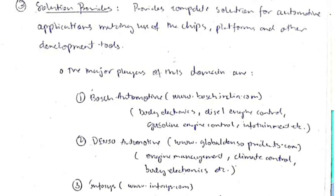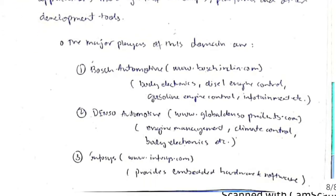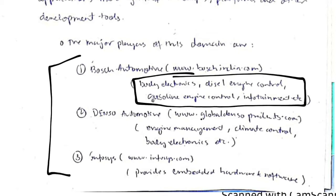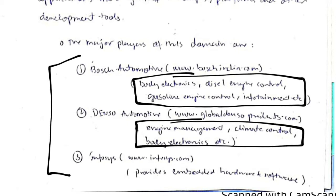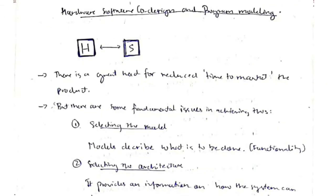Solution providers are companies you refer to when errors occur in your embedded system — they solve those errors. Each solution provider company has chosen a few domains to address their problems.